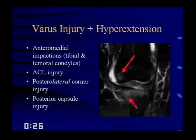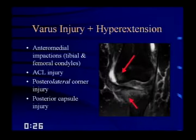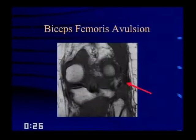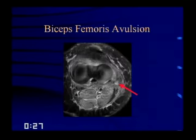Varus injury plus hyperextension is uncommon, but to reinforce the concept: the varus component gives medial impactions, and hyperextension gives anterior impactions — combined, you get anteromedial impactions of the tibial and femoral condyles. Therefore look for posterolateral soft tissue injury. These patients can also get ACL and posterior capsule injury. Here you see the anteromedial bone bruises, and this person had a biceps femoris rupture — the tendon doesn't reach the fibula, with a lot of edema around it. On T2 axial images, there's a big hole where the biceps femoris tendons should be.